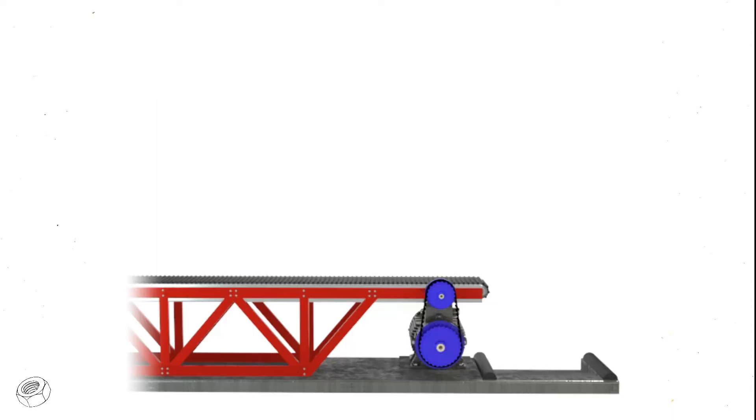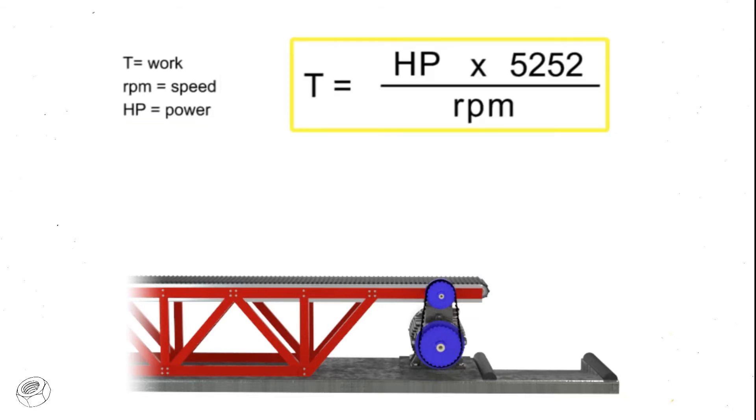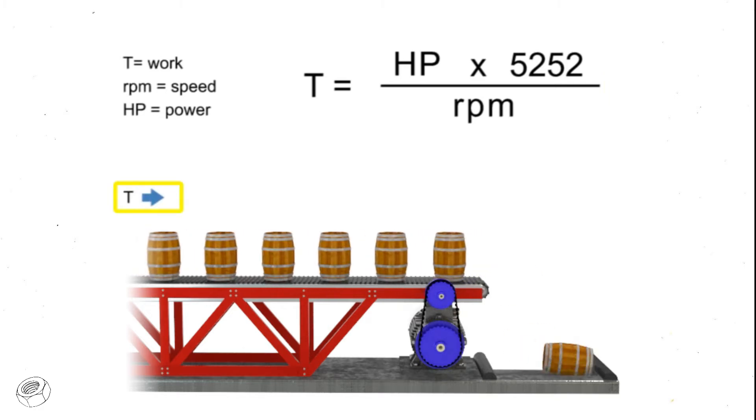You can manipulate the connection among speed, torque, and horsepower by understanding how they are related. The work accomplished here, the torque, is represented by the weight moving along the conveyor. If torque remains constant, speed and horsepower are proportional.